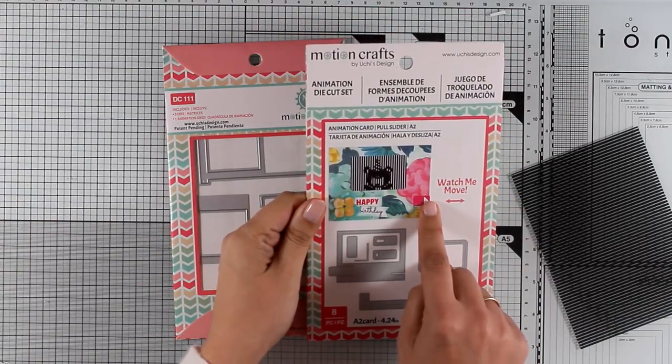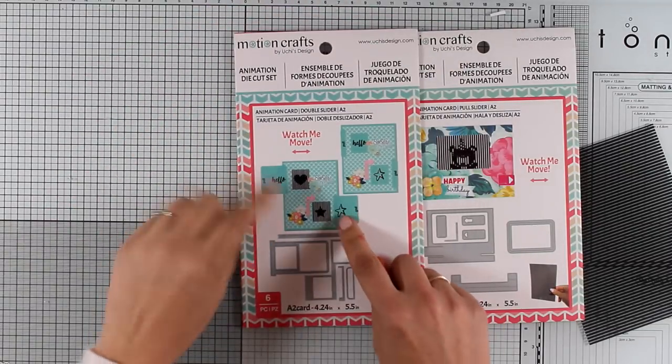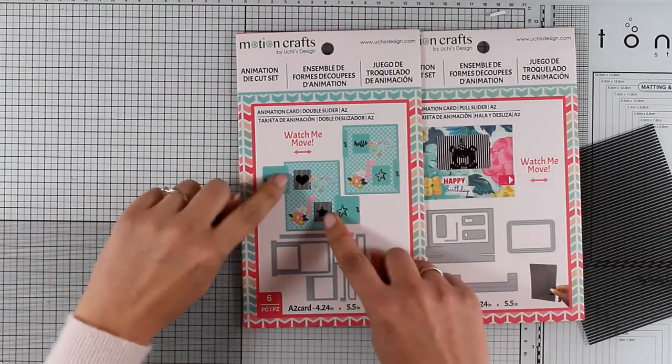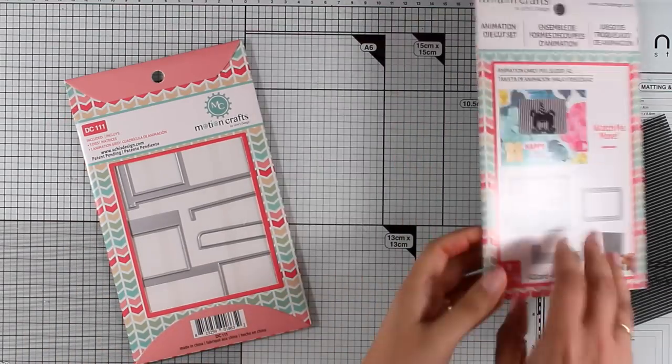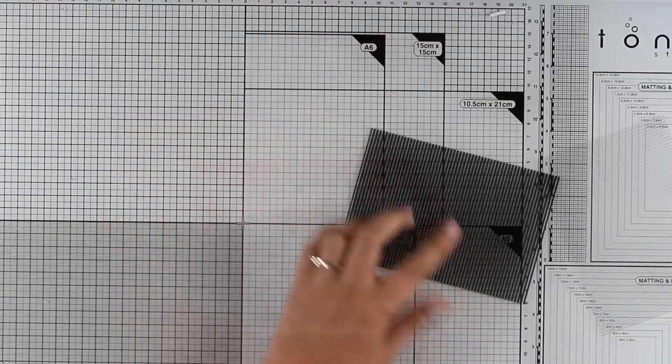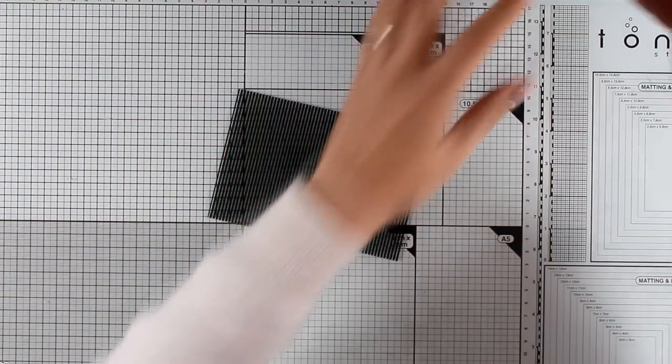They have stamps that match with images that don't actually move, so you can easily combine images to create your little scenes. They also have dies available to help you create those windows - the pull slider and the double slider.